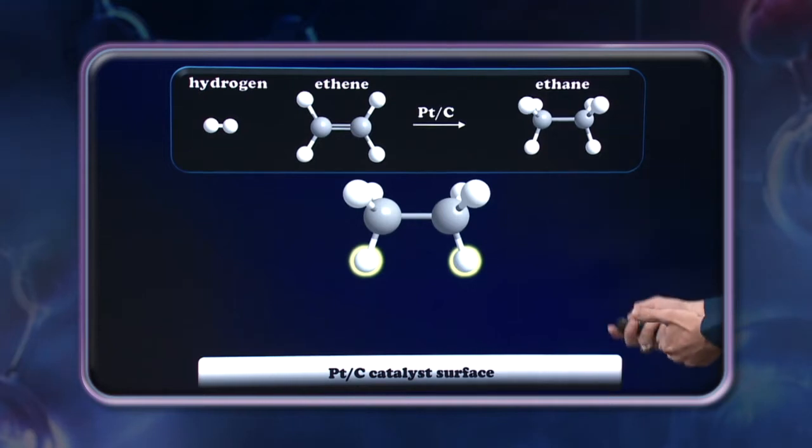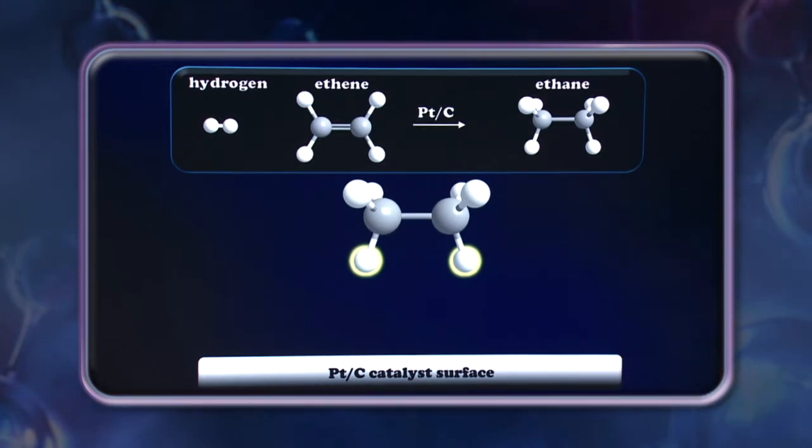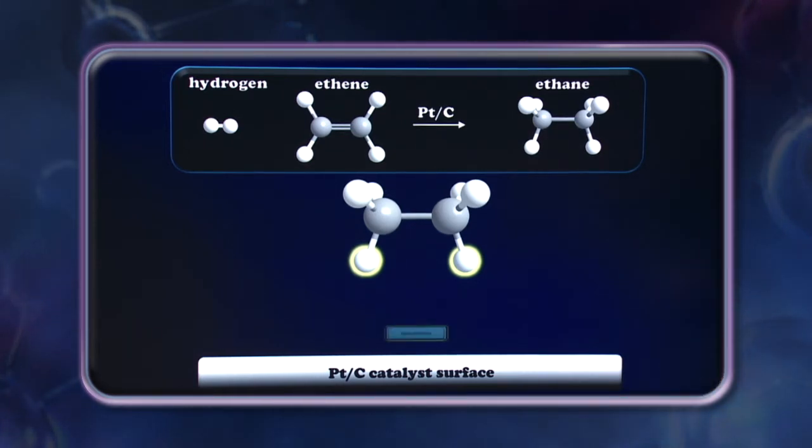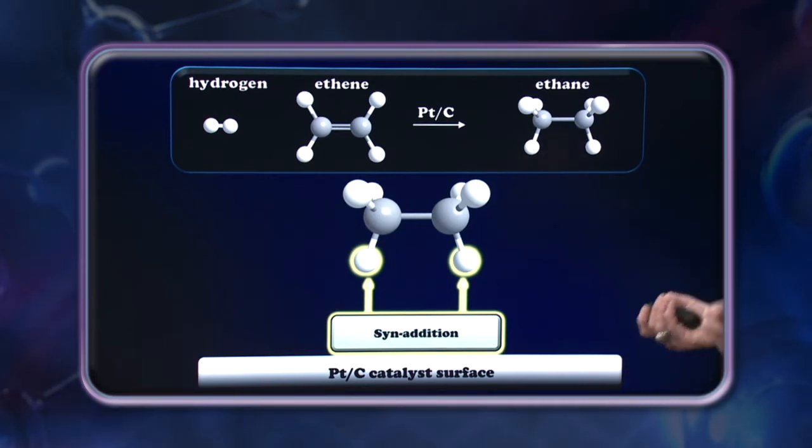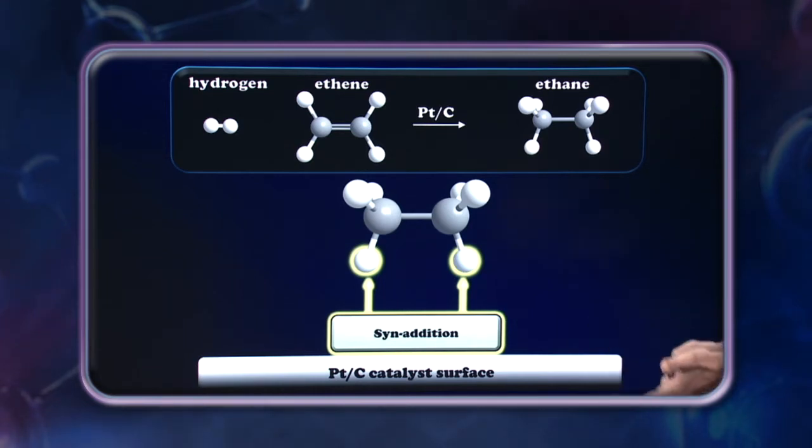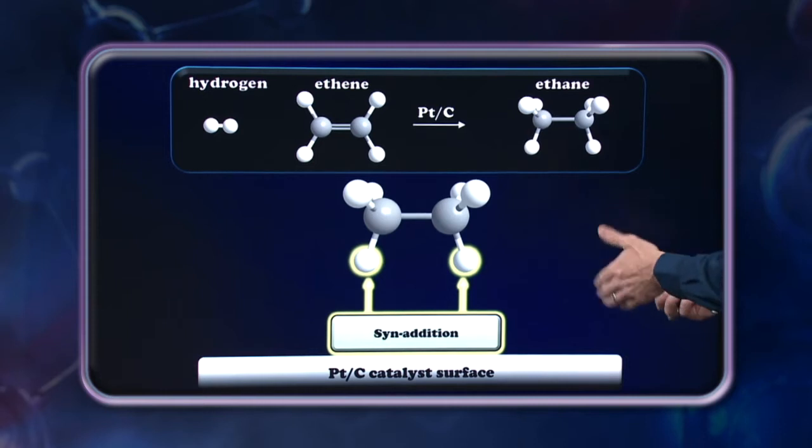Once hydrogenation is complete, you can see the molecule detaches itself and moves back away into either the liquid or gas phase. Now, the catch to this, of course, is we can only add the hydrogens from the same side of the alkene, meaning that this particular process proceeds as a syn addition. Syn, meaning the same side of the alkene, is modified.